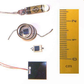A phototransistor is a light-sensitive transistor. A common type, called a photobipolar transistor, is in essence a bipolar transistor encased in a transparent case so that light can reach the base-collector junction. It was invented by Dr. John N. Shive at Bell Labs in 1948, but was not announced until 1950. The electrons generated by photons in the base-collector junction are injected into the base, and this photodiode current is amplified by the transistor's current gain beta, or HFE. If the base and collector leads are used and the emitter is left unconnected, the phototransistor becomes a photodiode.